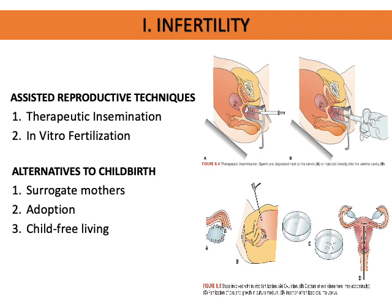In vitro fertilization involves no sexual intercourse and fertilization is not natural — the egg and sperm are fertilized in a test tube. These could be from the couple or donors. Once formed, the embryo is implanted in the uterus of the mother or a surrogate mother, followed by a natural implantation process. Other options include adoption, which involves an extensive legal process, or a child-free lifestyle.